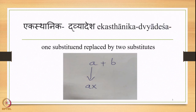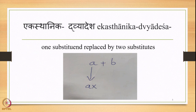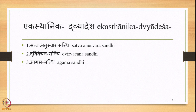Ekasthanika Ekadesha has been studied so far in this course. In this lecture, we shall start the study of Ekasthanika Dvyadesha — one substitute being replaced by two substitutes. There are three instances of Ekasthanika Dvyadesha: Sattva Anuswara Sandhi, Dvirvachana Sandhi, and Agama Sandhi.